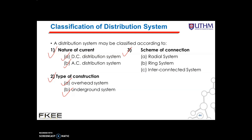The third classification is the scheme of connection. According to the scheme of connection, the distribution system may be classified as: the radial system, the ring system, and the interconnected system. Each of these systems has its own advantages and disadvantages.